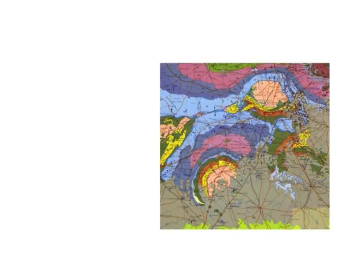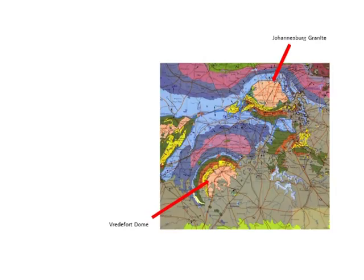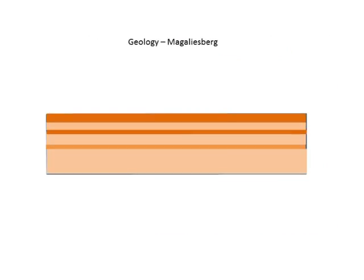This geological map of Gauteng and the surrounding provinces shows three structures where doming or basining has taken place. The first one is the Bushveld Igneous Complex — that's the green area in the north. The second one is the Johannesburg granite, the round pink body in the north of the picture. And the third one is the Vredefort dome, a dome-shaped structure pushed up through the sediments in the northern Free State and southern Gauteng. This is actually a meteorite impact, where the granite rebounded after a huge meteorite hit this area. All are circular structures that have caused horizontal strata to become domed or basined.